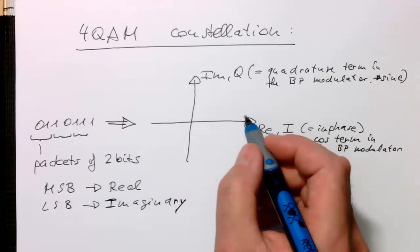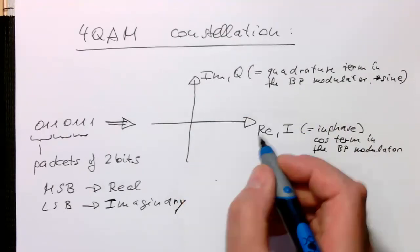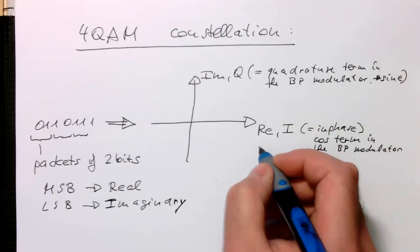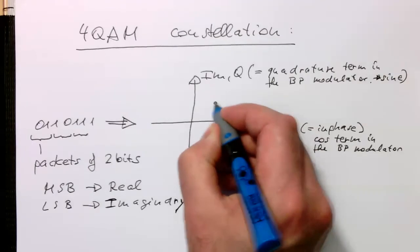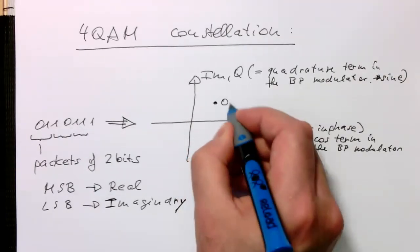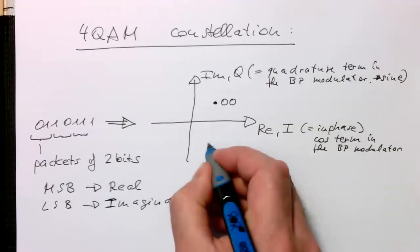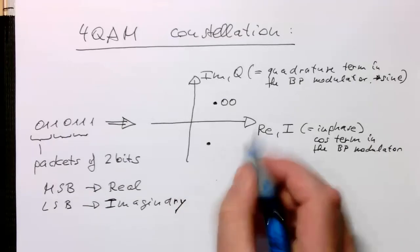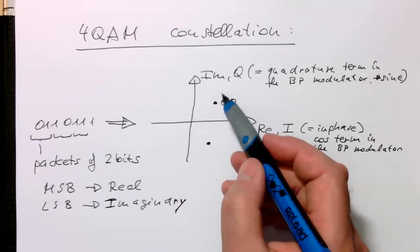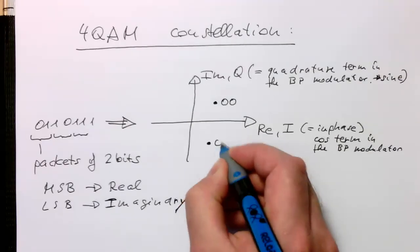And so we stick to this now, and let's look which numbers we're getting out here. If you have a constellation point here, we call this zero zero. And now if you have a constellation point here, and so the imaginary part is flipped, then that's the LSB, so that's a zero one.